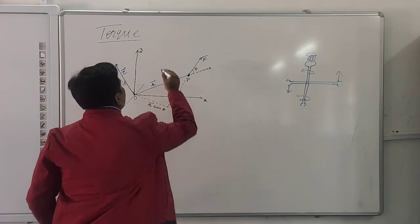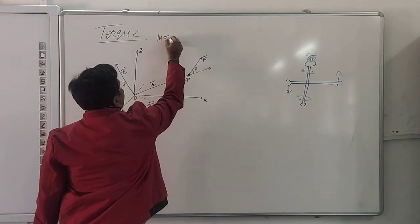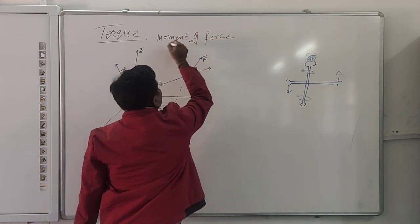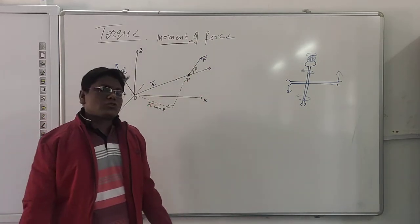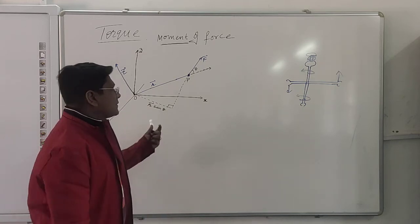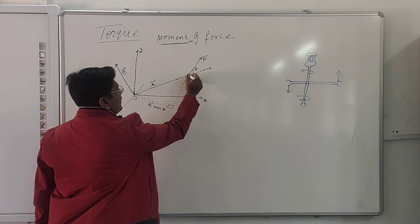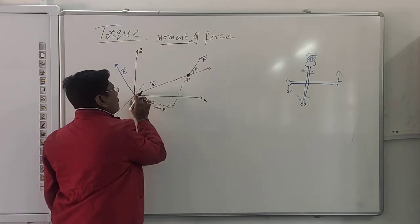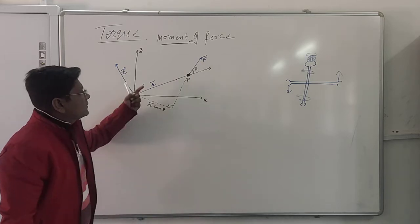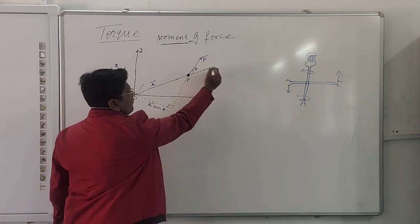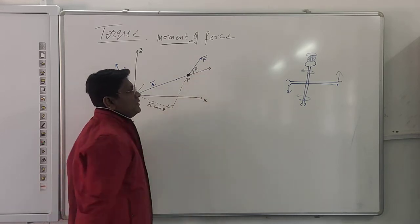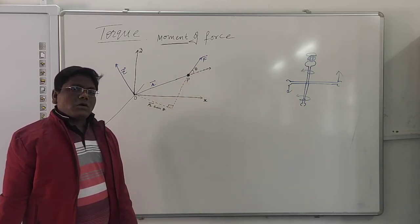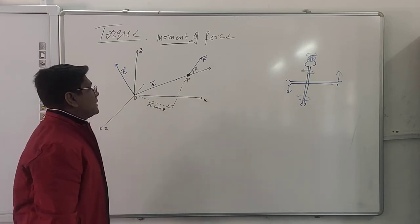So what is basically the torque? The simplest definition is: torque is the moment of the force. Now, when we say 'moment,' let us understand this. Consider a particle at point P on which you are applying some force F. The position vector r of this point P makes an angle theta with the direction of the force.